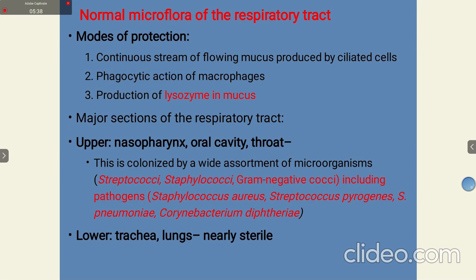The lower respiratory tract — trachea and lungs — normally remains sterile. In rare cases, after infection or during disease conditions, it becomes inhabited. During any viral infection, if the upper respiratory tract infection is not cured, it can progress to the lower respiratory tract.